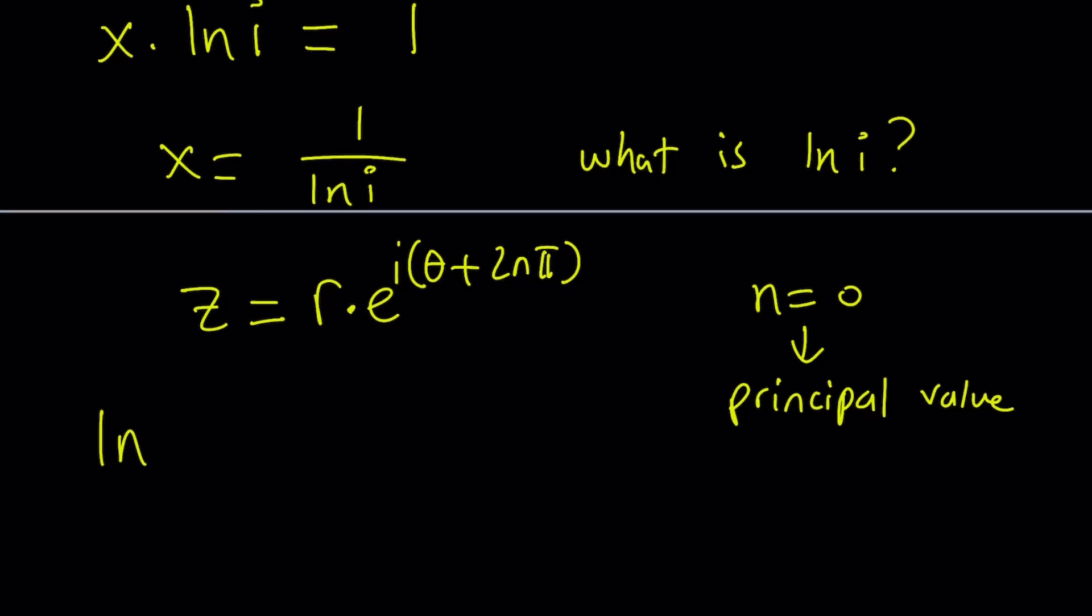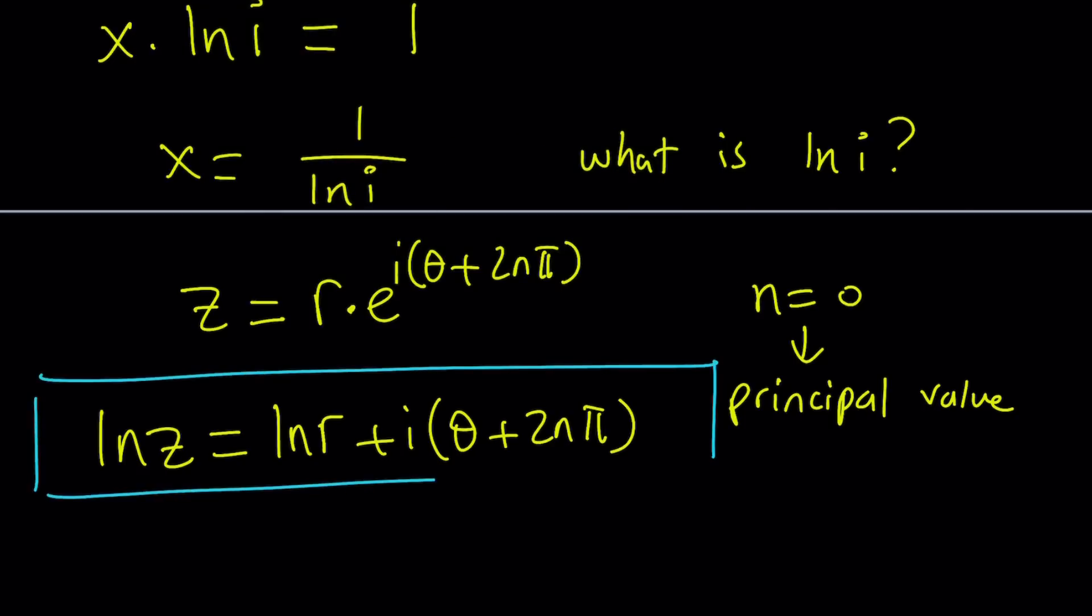If you ln both sides, you're going to get the following equation from here. ln z equals ln r plus i times theta plus 2nπ. Because ln e is equal to 1, you basically get this as a result. So this is something that you can definitely use as a formula.